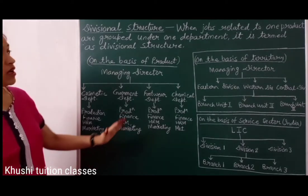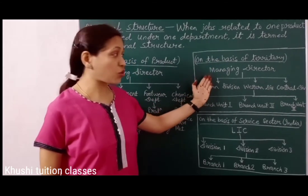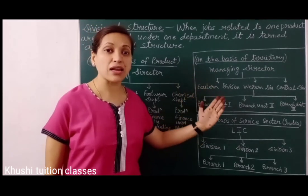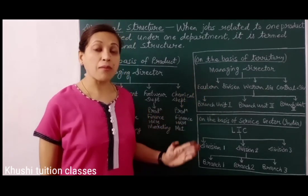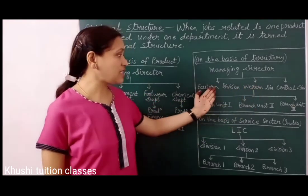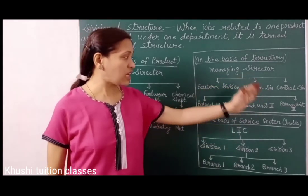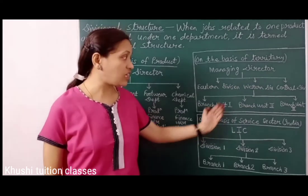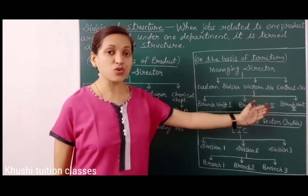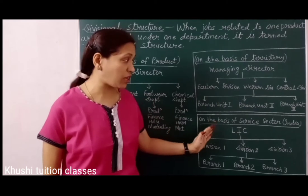Now we see divisional structure on the basis of territory. यहाँ एक managing director होगा. अब यह business domestic market या international market के लिए भी हो सकता है. हमने अपने total market को कुछ divisions में divide कर दिया, जैसे eastern division, western division, central division. हर एक division के लिए कुछ branches होगी, जैसे western division में branch unit 1, branch unit 2, branch unit 3. इसी तरह branches eastern division और central division के लिए भी होगी.